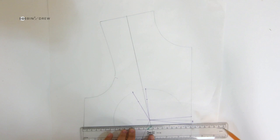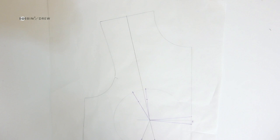Extend the bust line on the side front panel. And we also need these markings so we don't get lost later on when we're piecing together all these panels.